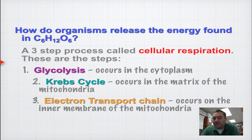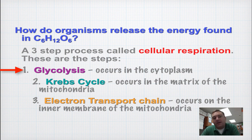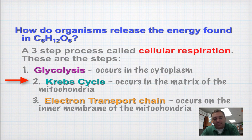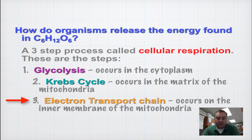There are three main steps when it comes to cellular respiration. Number one is glycolysis, which occurs in the cytoplasm. Then the next two steps are going to occur in the mitochondria — that would be the Krebs cycle and the electron transport chain.